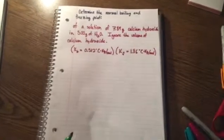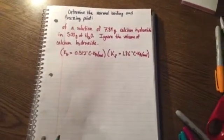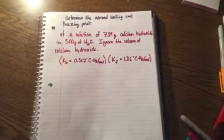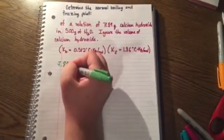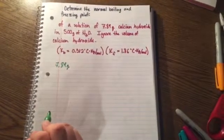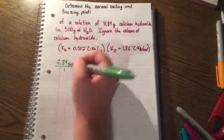To begin, we need to solve for molality. So we are going to take our 7.89 grams of calcium hydroxide. We put that over 1. We're going to multiply that by 1 mole.